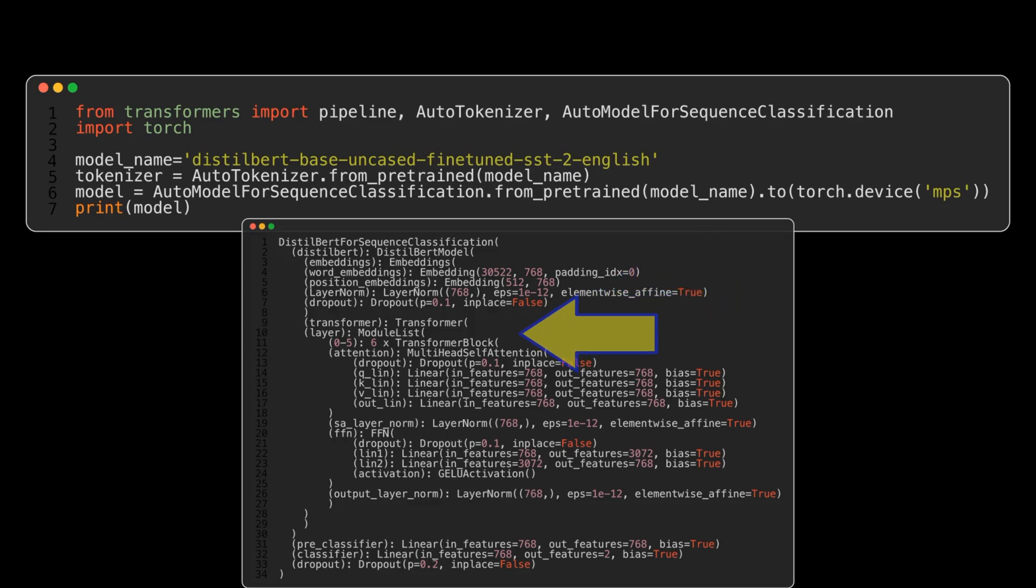We can see the six transformer blocks with their attention heads and associated feed forward network. This feed forward network has three layers. Input and output layers are the same size as the embedding layer and the hidden layer is four times that at a value of 3072 neurons. This hidden layer factor of four is standard practice in many LLMs.